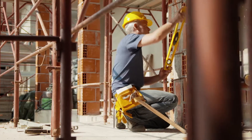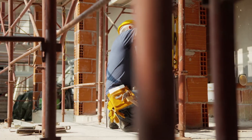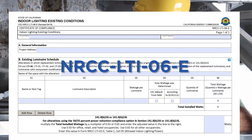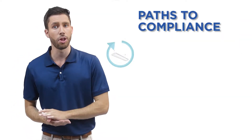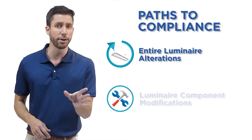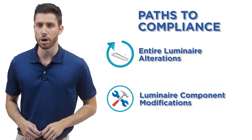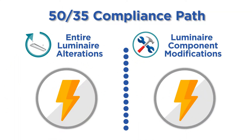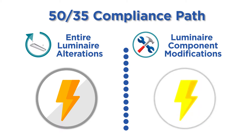We'll also discuss which forms need to be completed for each alteration type, as well as introduce a new certificate of compliance form NRCC-LTI-06-E, Indoor Lighting Existing Conditions. Let's discuss the three paths to compliance for lighting alteration projects. These compliance pathways affect both entire luminaire alterations and luminaire component modifications. The first and simplest path to compliance is through reducing the power of luminaires, and this compliance path is available for both entire luminaire alterations and luminaire component modifications.